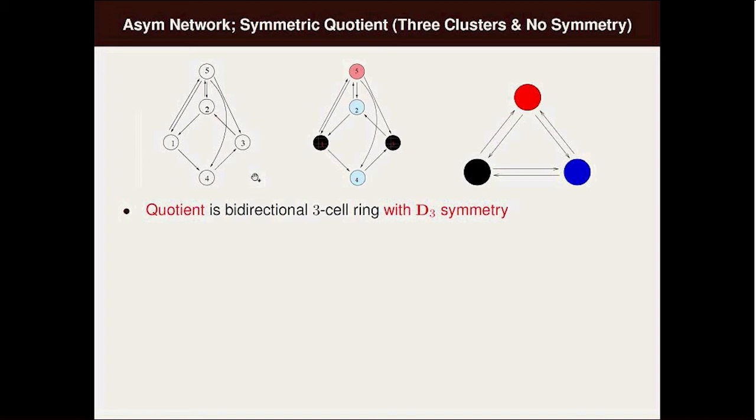You have this network on the left, the five node network, that has no symmetry. It's easy enough to check that. But if I color it black, blue, and red as in the middle figure, then notice blue nodes receive a black and a red input.